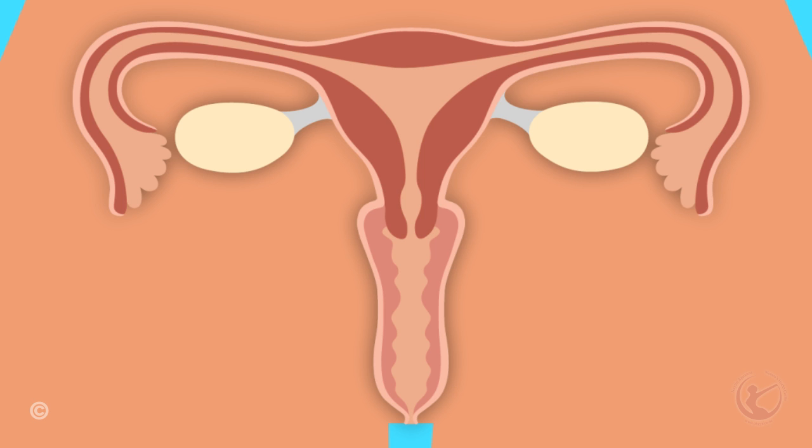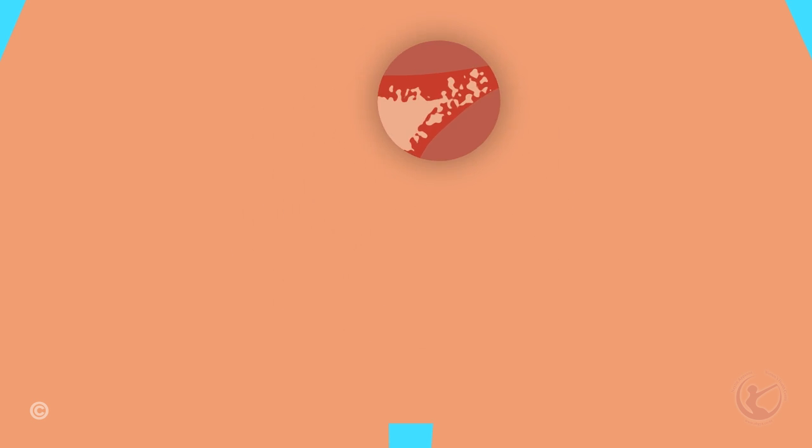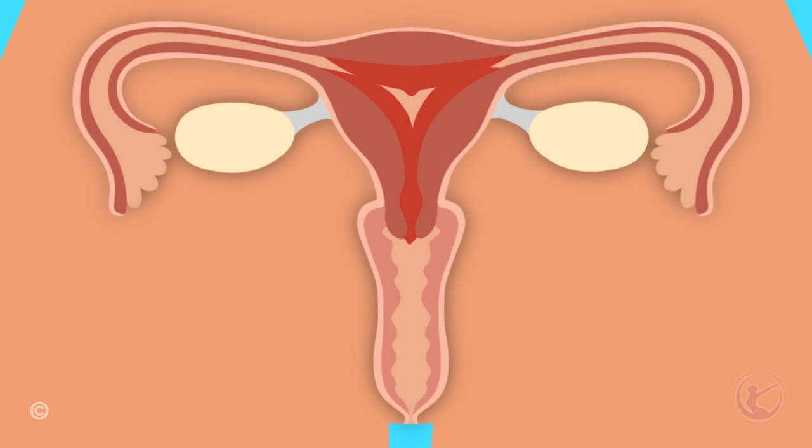What happens to the uterus? The estrogen thickens the lining of the uterus, getting it ready to accept a pregnancy. The progesterone increases the glands in the lining to support a pregnancy. If you fail to fall pregnant, the hormone levels fall away, and you will have a withdrawal bleed.